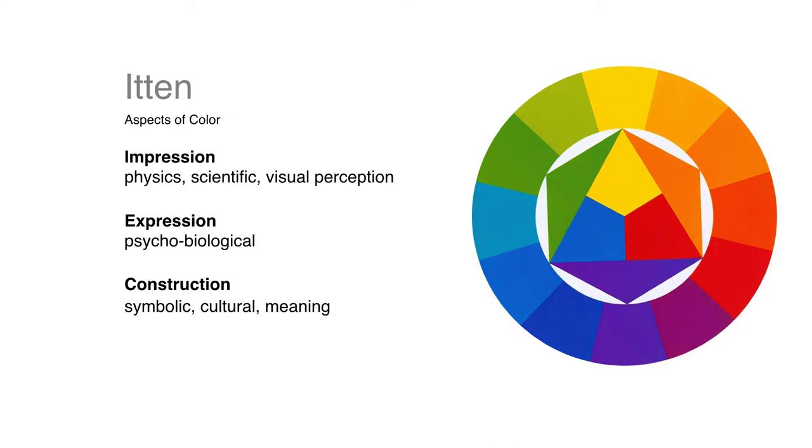Itten also proposed three aspects of color study in the way that artists and designers use color. Impression is the physical, scientific idea of color. That's the absolute understanding of color. Albers' theory of color relativity would fit in the impression zone.